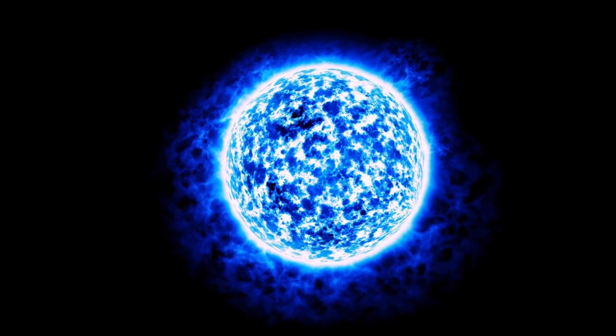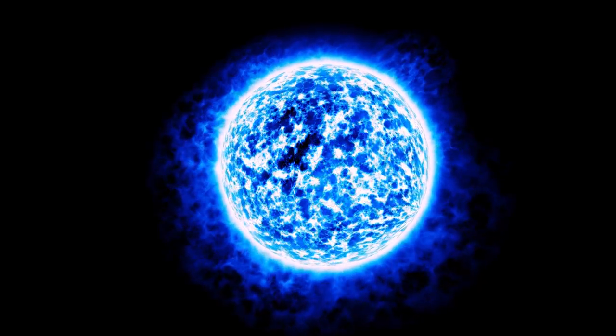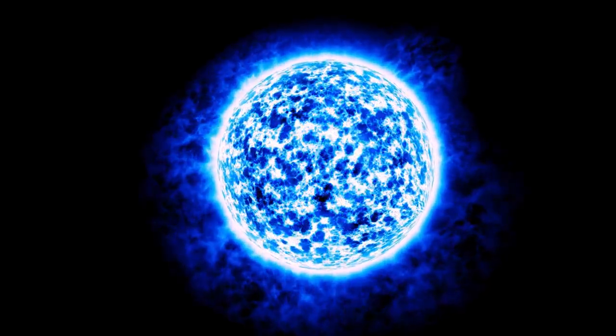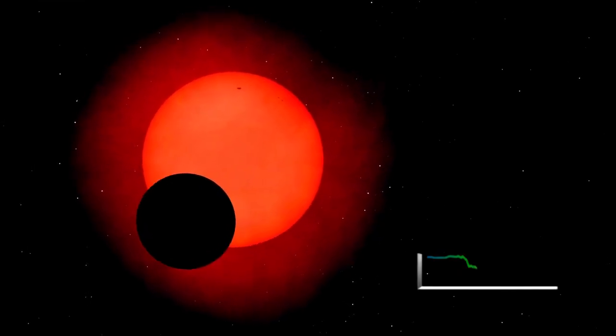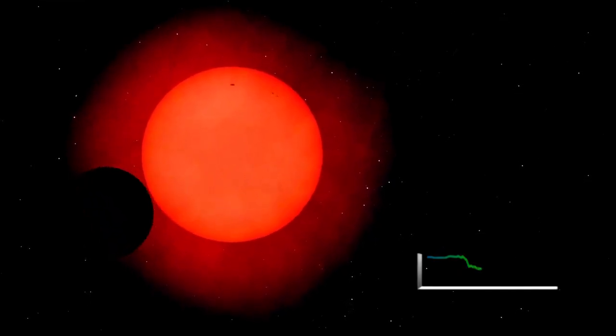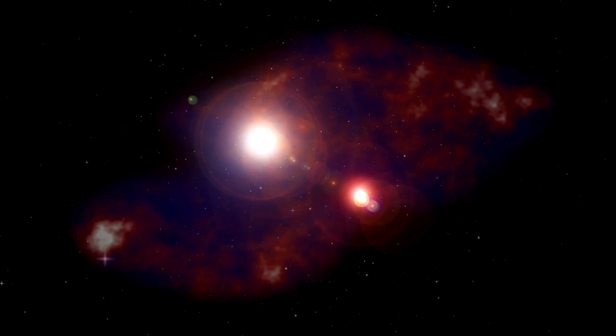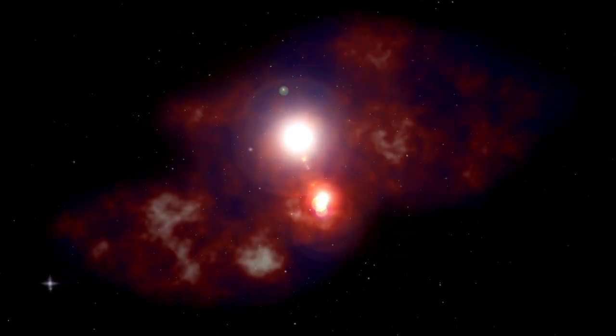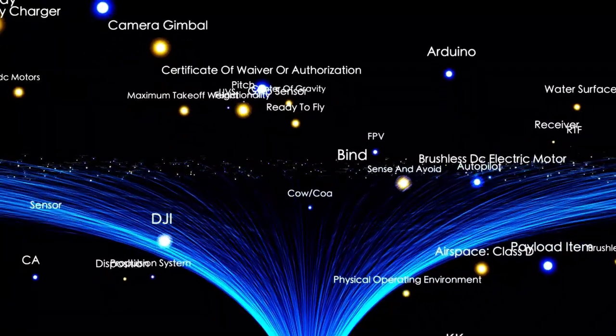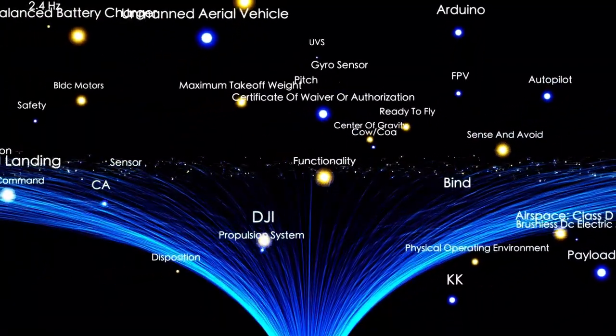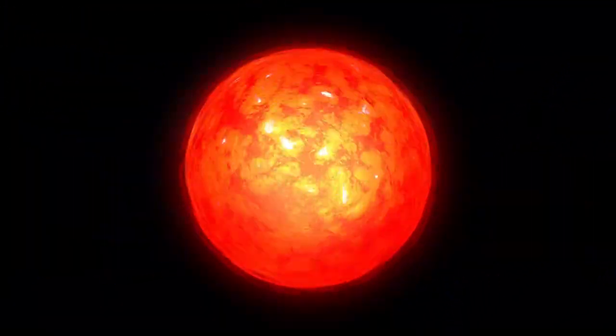This star is classified as a red supergiant, a type of massive star nearing the end of its life. Located around 642 light years from Earth, Betelgeuse is among the largest and brightest stars in our galaxy. It's estimated to be about 700 times the size of the Sun and over 10,000 times more luminous. Red supergiants like this are known for being unstable as they approach their final stages, with fluctuations in brightness being relatively common.